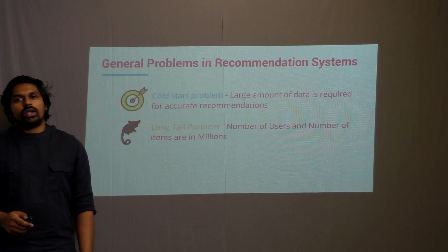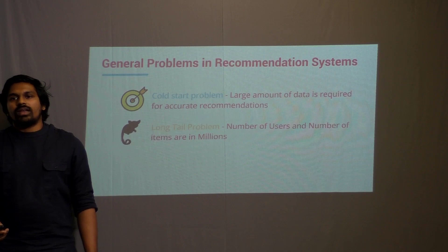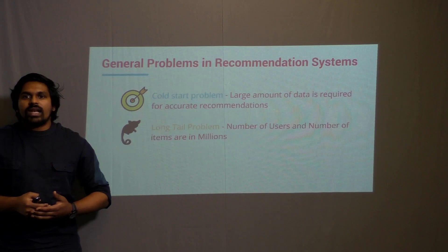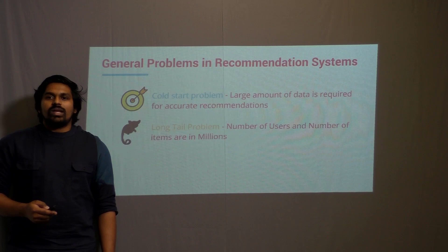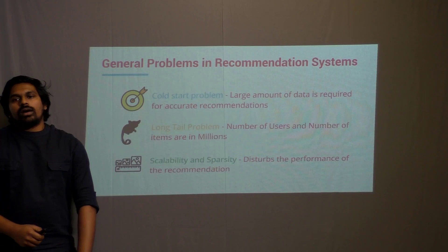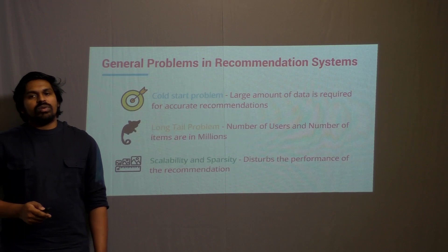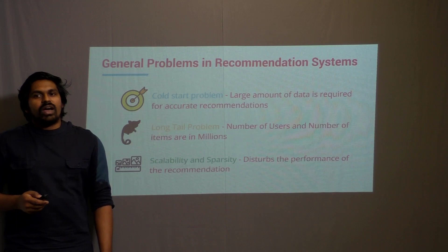The second problem is the long tail problem, where with big data, we have more users and the number of songs in the millions. The probability of a particular user listening to a particular song becomes very minute, and this scale has to be taken care of. Additionally, because of the huge data available, the matrix we build for recommendations will be very sparse, since every user will not listen to every song.